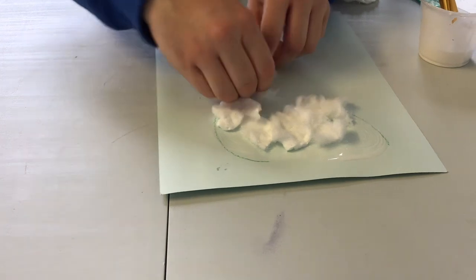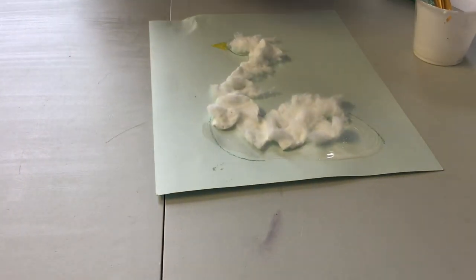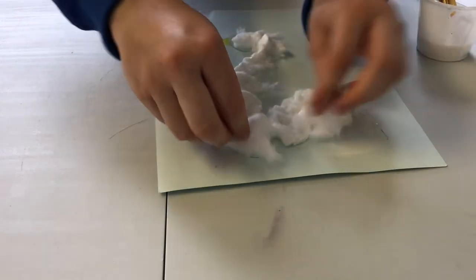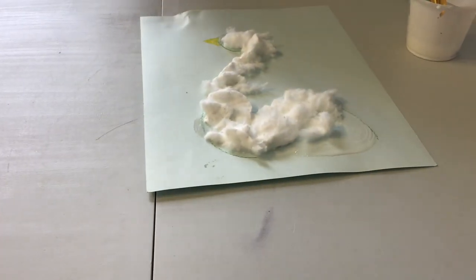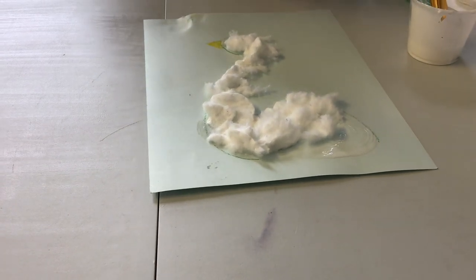So once you have your goose all done, you can add maybe a river here and maybe some background things like some trees would be nice. Maybe your goose doesn't even live in a river. Maybe it lives in the lava or maybe it lives in a house. So you guys can add whatever background you want after. That's totally fine.